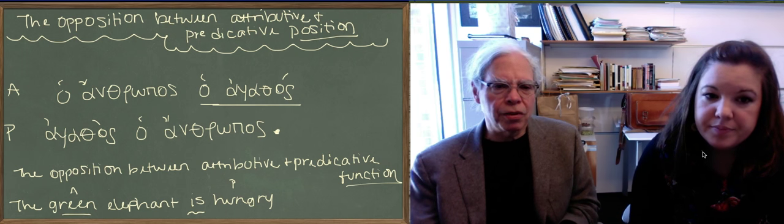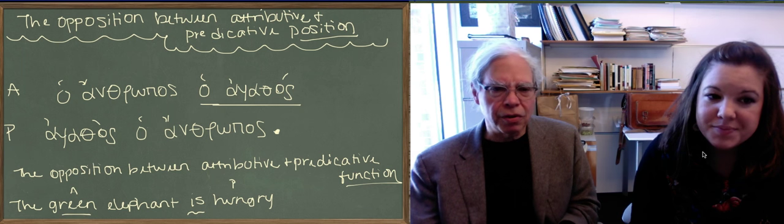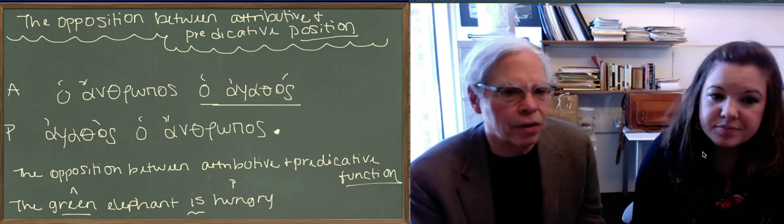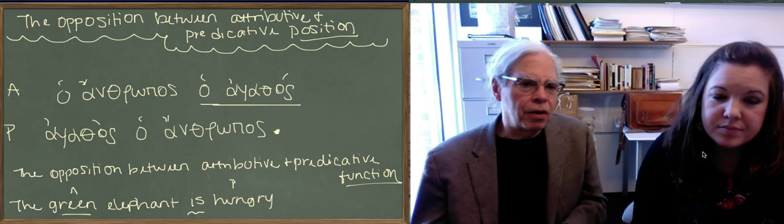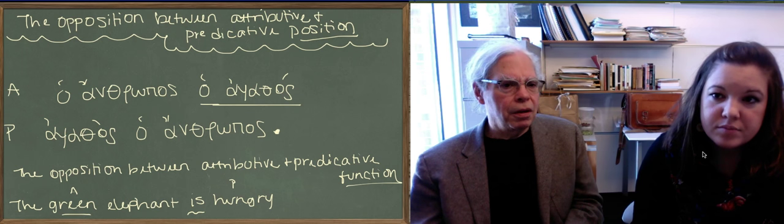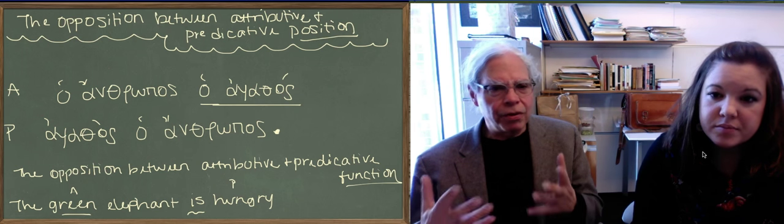So it's good to get used to the fact that it's not always "the good human being" the way it works in English. So that modifier, agathos, is an attribute. And that means that ha-anthropos, ha-agathos up there is not a sentence. It means "the good human being." That's all. We don't have a sentence, we don't have a verb, we don't have anything.